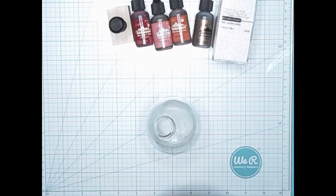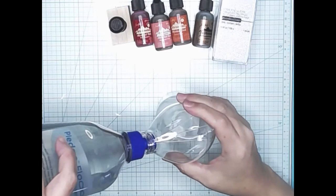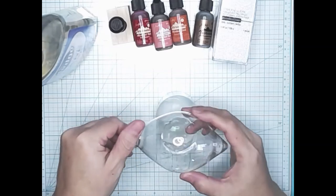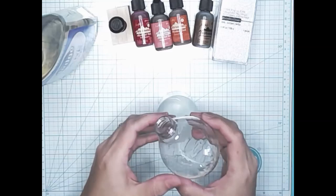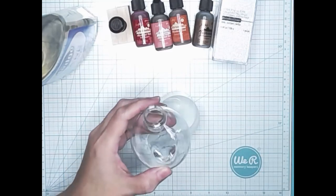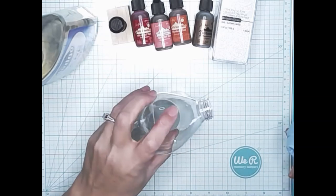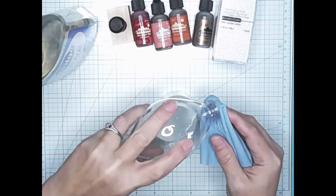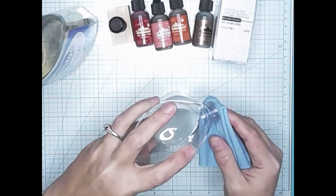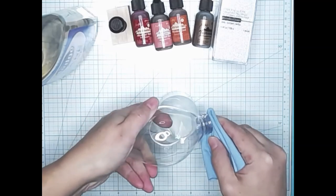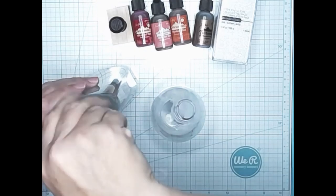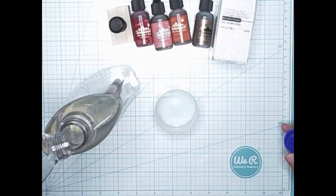All right, so the first thing I'm going to do is I'm going to take my Pledge Floor Care, and I'm going to put a decent amount of it into my ornament. And we're just going to move that around so we get a real good coat of the floor wax in here. We don't want to miss any spots. If you've missed spots, you're going to see it in the end product because your glitter will not stick.